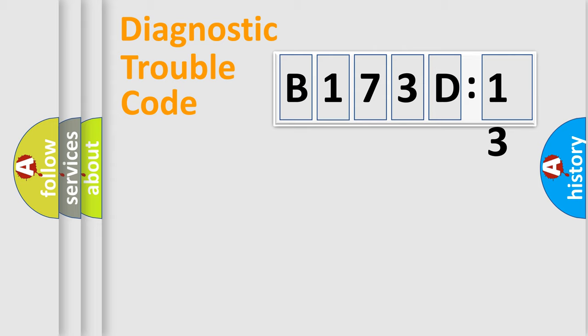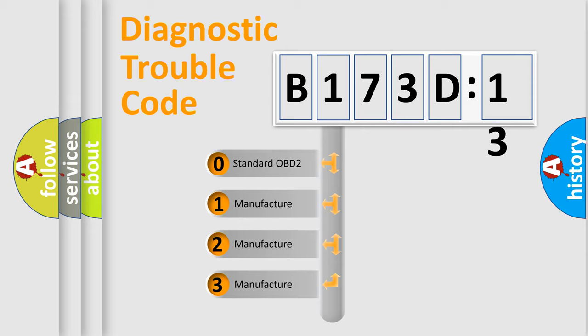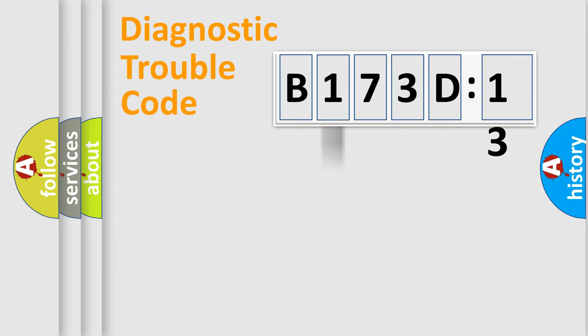Powertrain, Body, Chassis, Network. This distribution is defined in the first character code. If the second character is expressed as zero, it is a standardized error. In the case of numbers 1,